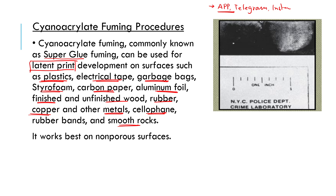So cyanoacrylate fuming can develop latent fingerprints on plastic surfaces, tape surfaces, garbage bags, foam, carbon paper, aluminum foil, finished or unfinished wood, rubber, metal surfaces, silicon surfaces, and smooth rocks. It works best on non-porous surfaces, though it can also be used on porous surfaces.